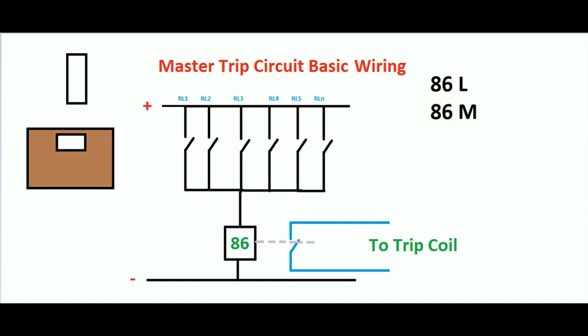We will say the 86M is the heavy fault. What is the heavy fault? We will discuss the restricted fault, standby fault, and all types of fault — instantaneous fault. We will say the short circuit: internal, differential, rotor. The 86M — this is the heavy fault.